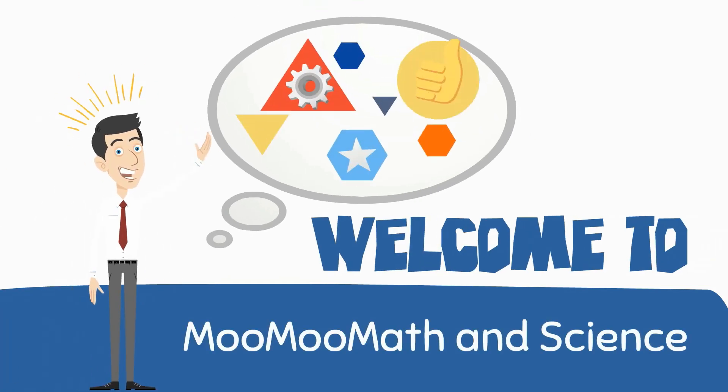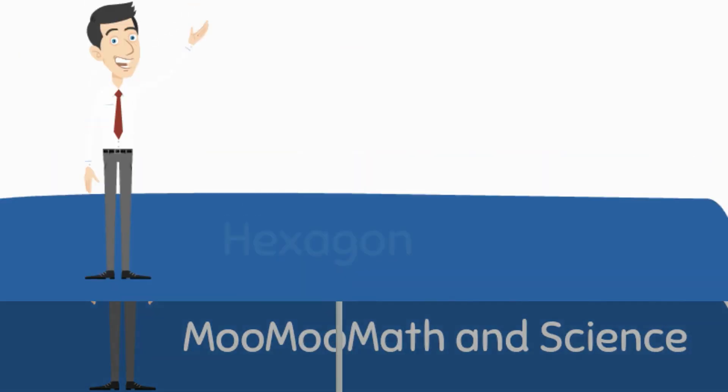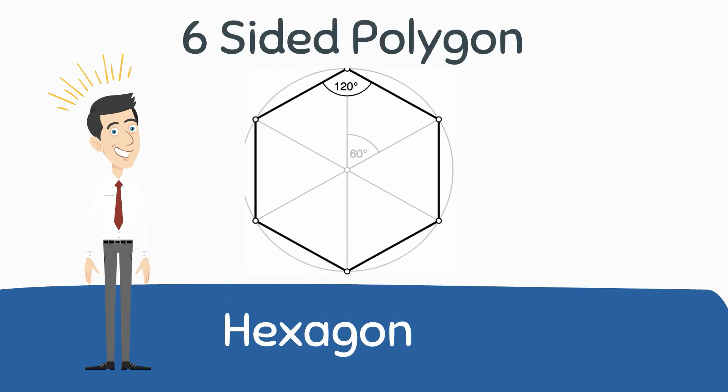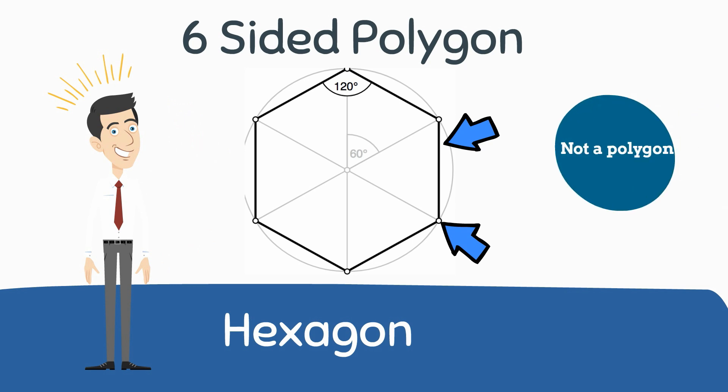Welcome to MooMooMath and Science. In this video I would like to talk about a six sided polygon called a hexagon. A regular polygon has equal length sides and equal angles between each side.